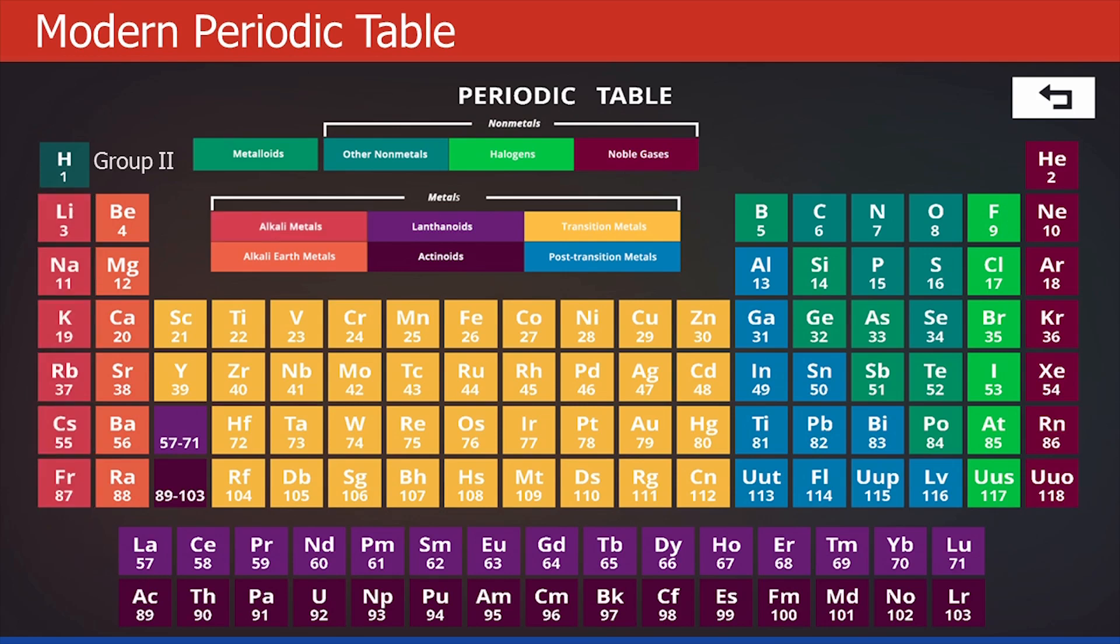Now let's move to the second group, which has beryllium, magnesium, calcium, strontium, barium and radium. These elements are commonly called as alkali earth metals.